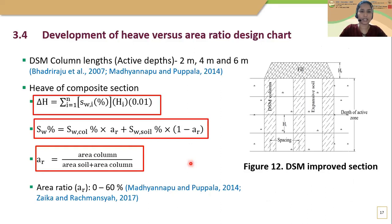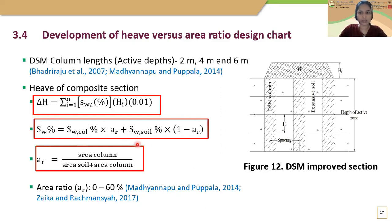The next step is development of the Heave versus Area Ratio design chart. This chart was developed for the optimum binder content with different column lengths including 2, 4, and 6 meters. The equations used calculate the heave of the composite section, where SW indicates the swell percentage of the composite section, SW column is the swell percentage for the treated column, and SW soil is the swell percentage for the untreated soil. In this research, the area ratio was considered from 0 to 60%.